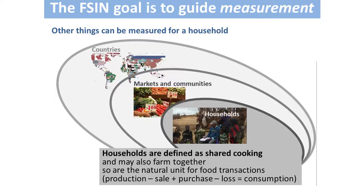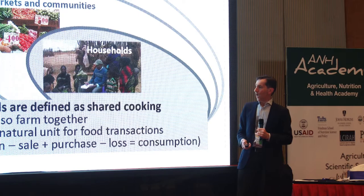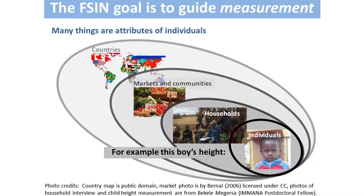The household is the natural unit of account for many food transactions — production, intake, and food systems transactions often occur at the household level. And finally, individuals are people who have, for example, heights, weights, hemoglobin, vitamin A levels, and so on. This is a different way of classifying measures — not the usual approach.